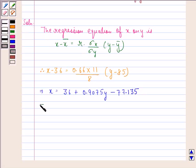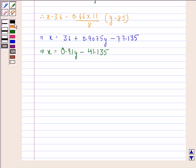This implies that x is equal to 0.91y minus 41.135. This is the answer to first part.